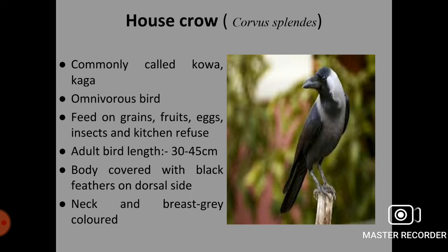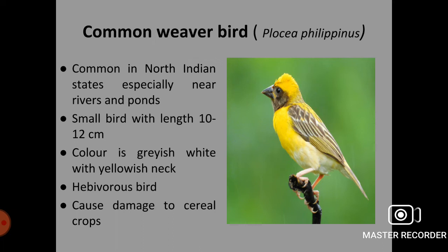Next pestiferous bird is the common weaver bird, Ploceus philippinus. It is very common in North Indian states, especially near rivers and ponds. It is a very small bird with length of 10 to 12 cm. Color is greyish white with yellowish neck. It is a herbivorous bird that causes great damage to cereal crops.